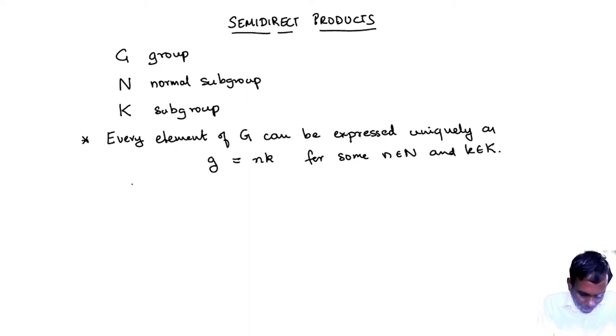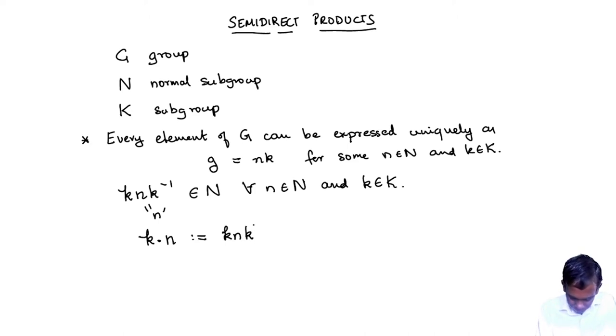So then what you can do is you look at the elements of the form k n k inverse for any n in N and k in K. Now because capital N is a normal subgroup of G, this thing belongs to N. So let's write this is some other element n prime. Let's write k dot n for k n k inverse.